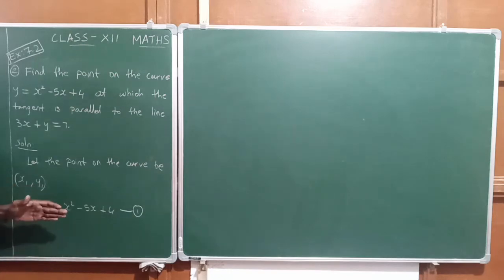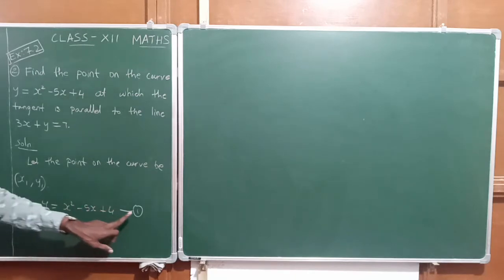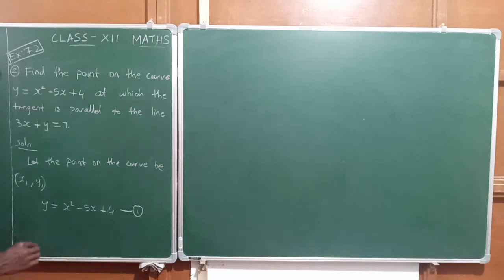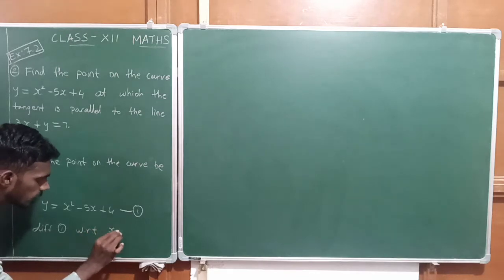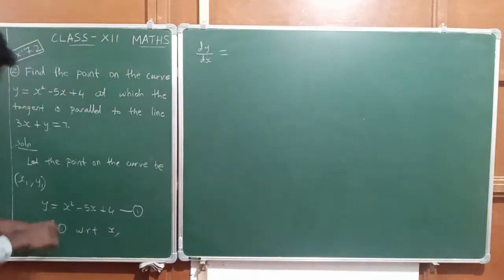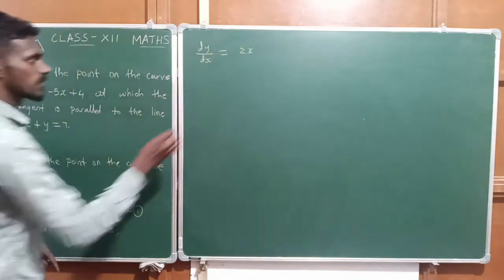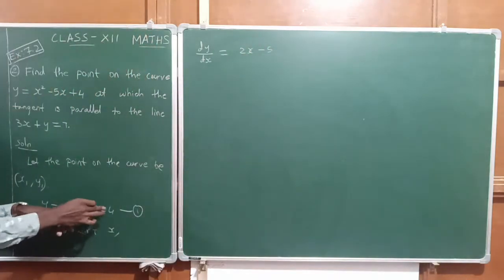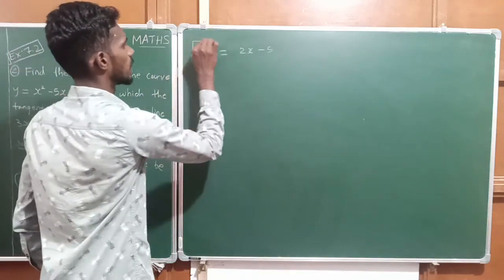We need to find the slope. To find the slope of the tangent, we differentiate the curve with respect to x. We will be getting dy by dx. Differentiating x square gives 2x, minus 5x gives minus 5, and constant 4 differentiates to 0. So dy by dx is equal to 2x minus 5.